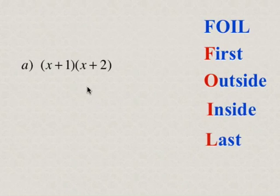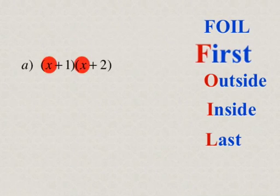So what we're going to do here is multiply, first of all, the first terms. The first terms here are the x and the other x. So x times x is x squared.